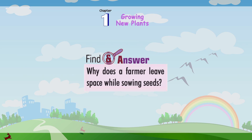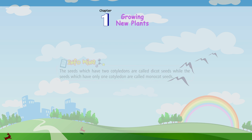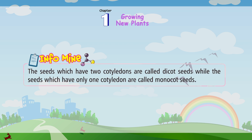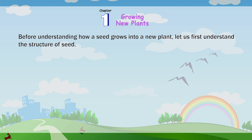Find and answer: Why does a farmer leave space while sowing seeds? Info mind: The seeds which have two cotyledons are called dicot seeds, while the seeds which have only one cotyledon are called monocot seeds. Before understanding how a seed grows into a new plant, let us first understand the structure of a seed.